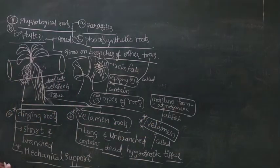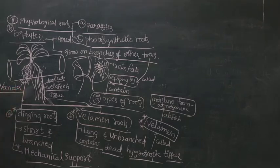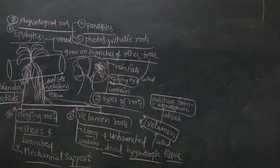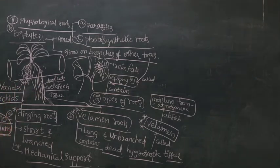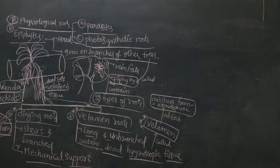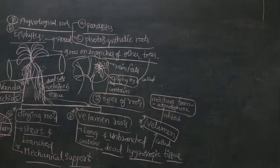This is about epiphytes. Examples of epiphytes are Vanda, Orchids, and Taeniophyllum. Taeniophyllum is also very, very important — we will come back to it. Vanda, orchids, and taeniophyllum are very, very important. These three are examples of epiphytes.